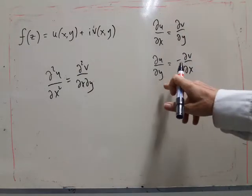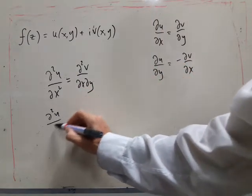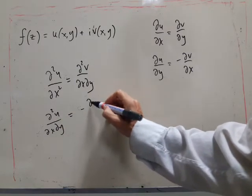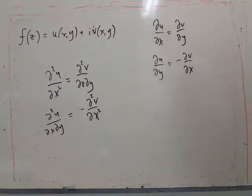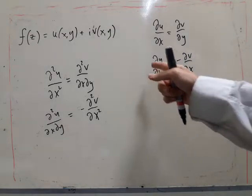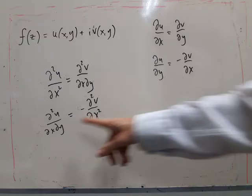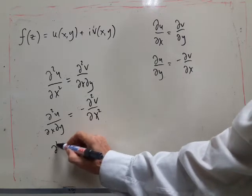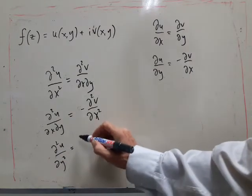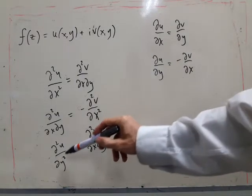And differentiate this with respect to x. So that gives us d²u/dxdy equals minus d²v/dx². Right. I also need to differentiate this with respect to—sorry, I did the wrong thing. I need to differentiate this with respect to—well, I can use this a bit later. I differentiate this with respect to y as well. So d²u/dy² equals minus d²v/dxdy and if I add this to this, then this cancels this.